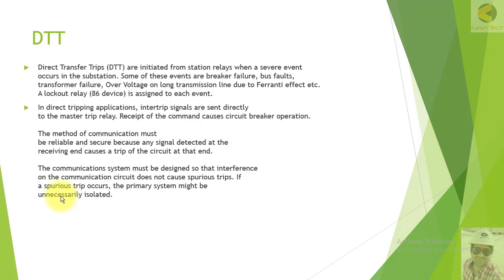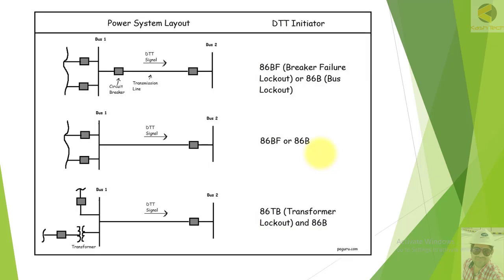The communication system must be designed so that interference on the communication circuit does not cause spurious trips. If a spurious trip occurs, the primary system might be unnecessarily isolated. Because of interference, if a signal is generated out of noise in a communication network, that will result in an unwanted tripping, which is obviously not desired.